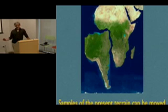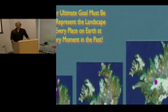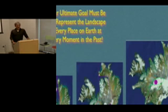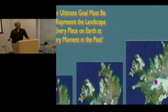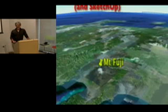The present DEM is key to the past DEM. We can use samples of the present terrain and move them around to effectively represent past landscapes. The ultimate goal beyond today's Google Earth is to represent the landscape at every place on Earth at every moment in the past — so we can see Iceland on today's Google Earth, and we'd like to see it 3 million years ago, 7 million years ago, 15 million years ago, and be able to go there, fly around, helicopter around it, just as we can with today's landscape.